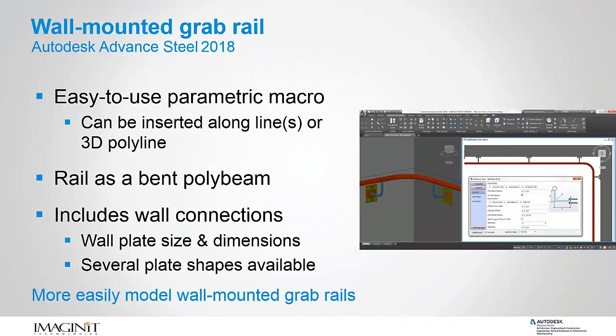Advanced Steel 2018 provides a new automatic and parametric macro for inserting a grab rail along a wall. It can be used with a series of model lines or a 3D polyline. The rail can be a bent poly beam or a series of arc beams and straight beams, and includes wall connections.